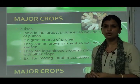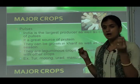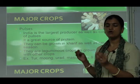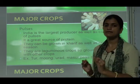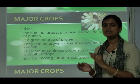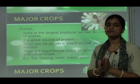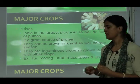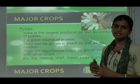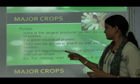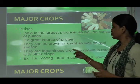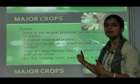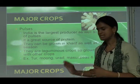Pulses are leguminous crops, so they are grown in rotation with other crops — you can grow them alongside or in rotation with other crops. Examples of pulses include toor, moong, urad, masoor, peas, and gram.